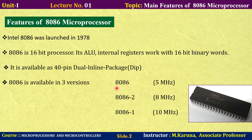The 8086 operates at 5 megahertz clock frequency. The 8086 version 2 microprocessor operates at a clock frequency of 8 megahertz, while 8086 version 1 operates at 10 megahertz clock frequency. Now, see this is the structure of the 8086 microprocessor.